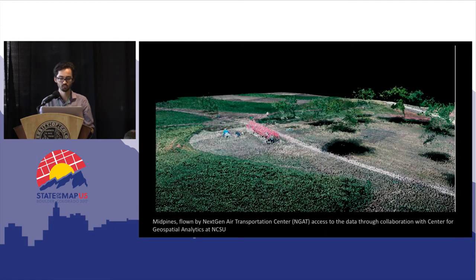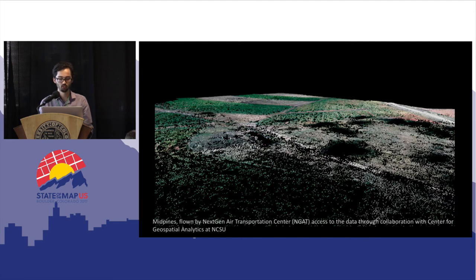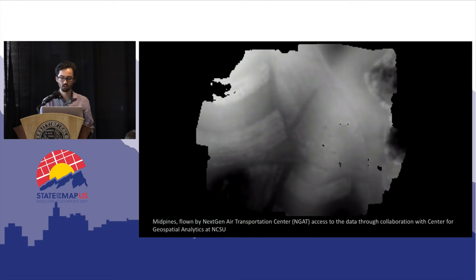With DTM extraction, for instance, you've got this nice point cloud dataset and you want to remove the trees and buildings to get an elevation. Here's some of the processes we've been playing with to get that, and then we can get this DTM out, which is quite nice.